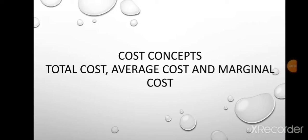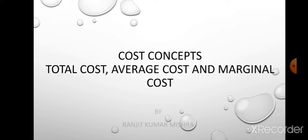Hello students. We all know that the main objective of a firm or a producer is to get a profit, and profit is just the difference between total revenue and total cost. Total revenue means the revenue or income earned by selling the produced goods, and cost means cost of production. Today in this class, we will discuss some important cost concepts like total cost, average cost, and marginal cost.